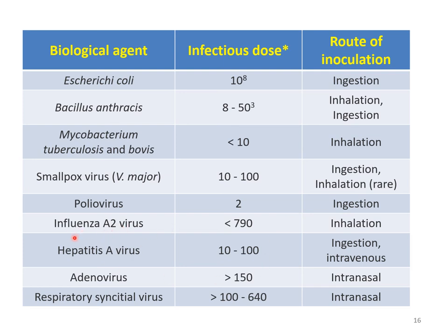Influenza A2 virus has an infectious dose of less than 79 via inhalation, and respiratory syncytial virus requires 100 to 260 via intranasal route. These are different routes, different doses, and different biological agents for your information. Regarding exams, you won't need to memorize all this data — only one or two very common organisms commonly used in bio or microbiology labs may appear in exam questions.